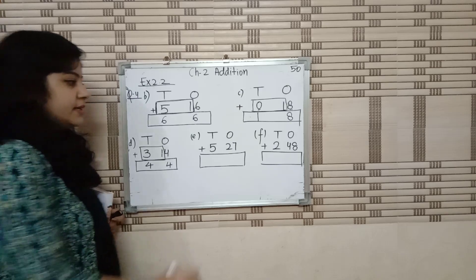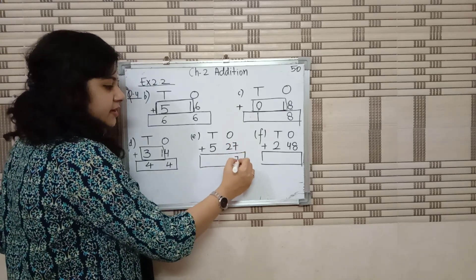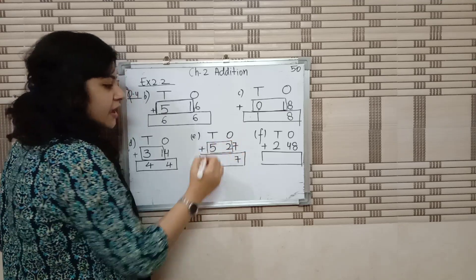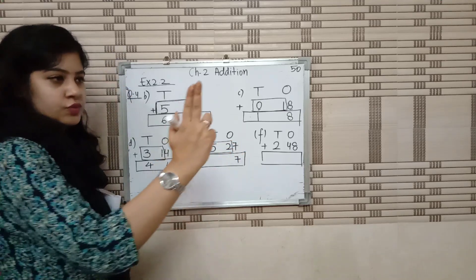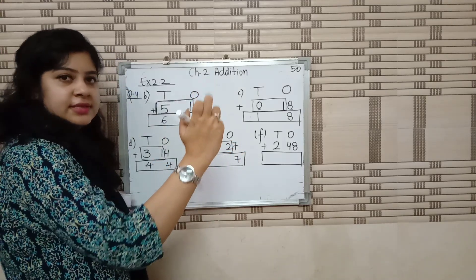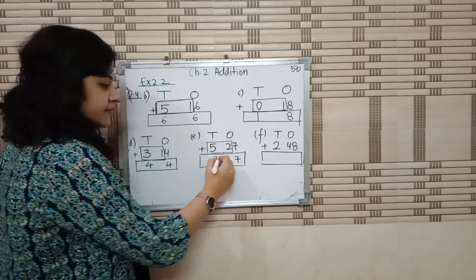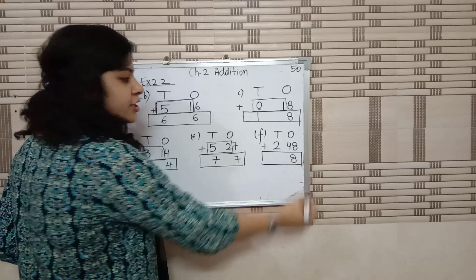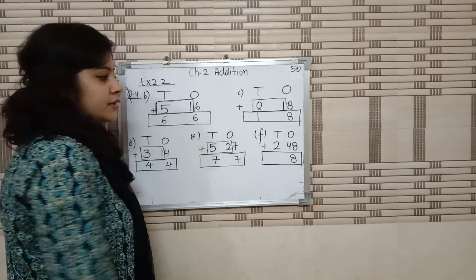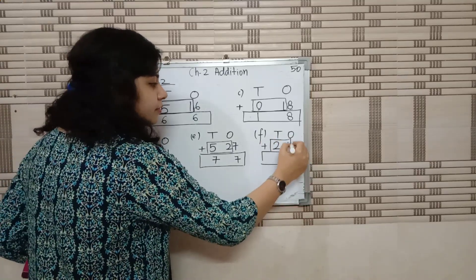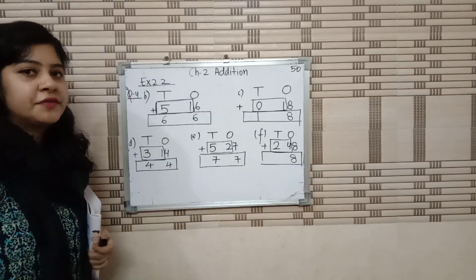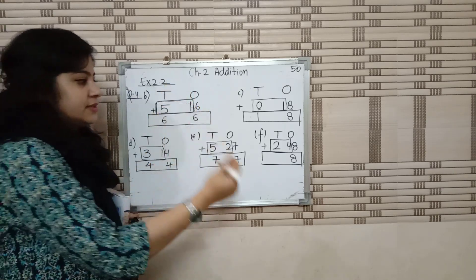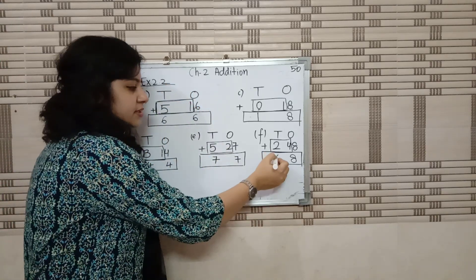Again, 7 is on 1's place, write 7 over here. Now group it — 5 and 2. 5 plus 2: 6, 7. 7 is the answer. Then, 8 is on 1's place, write 8 over here. Now group it — 4 and 2. After 4: 5, 6. Answer is 60.